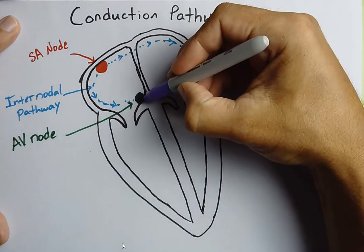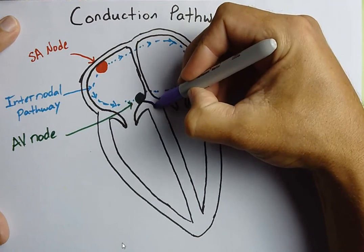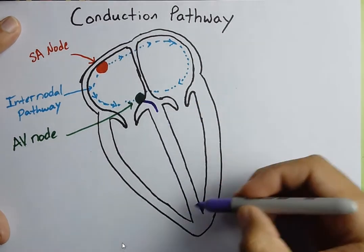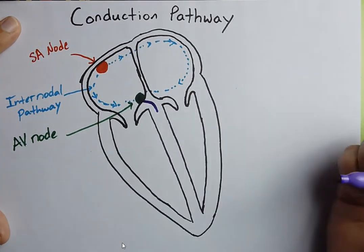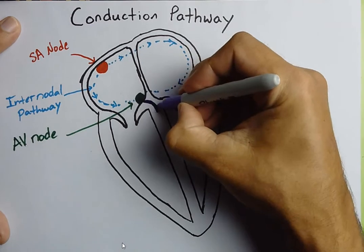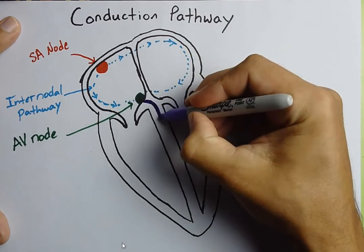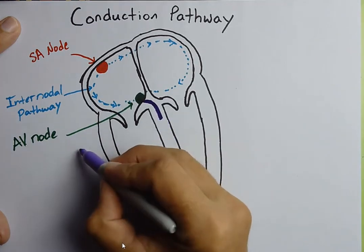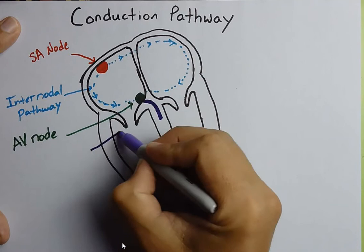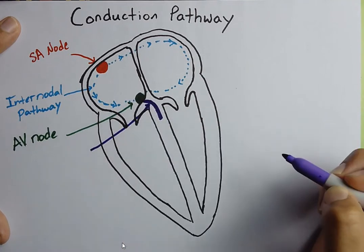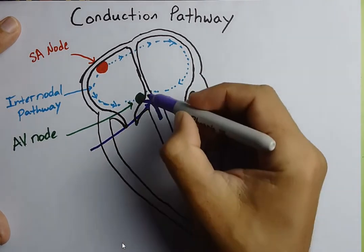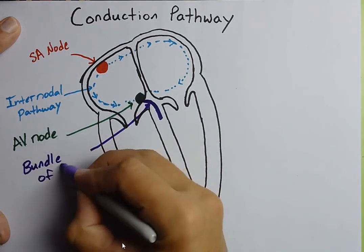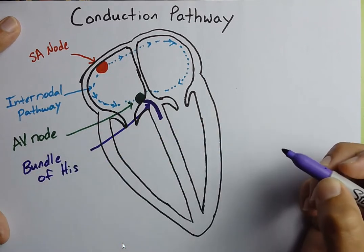This is now going to lead the AV node to finally start to descend down into the lower portion of the heart, into the interventricular septum. It's going to have to go through a very specialized group of conducting fibers that don't branch, that don't spread out. This is called the bundle of Hiss, otherwise just known as the AV bundle.